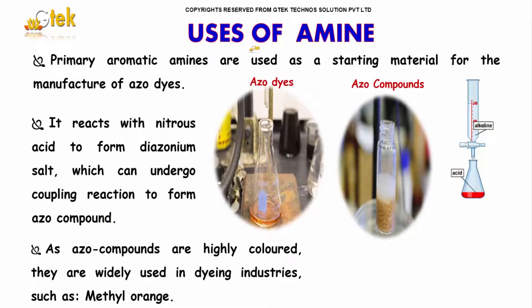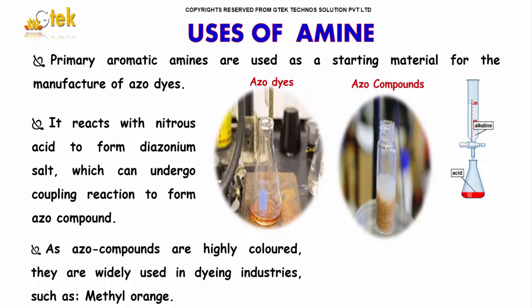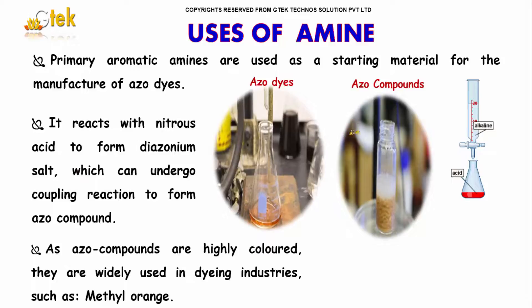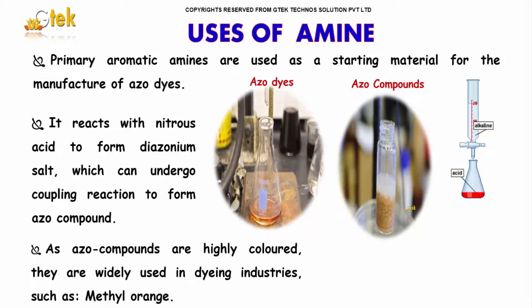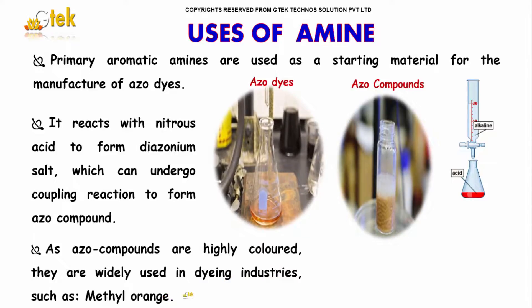Let's move on to the uses of amines. Primary aromatic amines are used as a starting material for the manufacture of azo dyes. They react with nitrous acid to form diazonium salt, which can undergo coupling reactions to form azo compounds. As azo compounds are highly colored, they are widely used in coloring and dyeing industries, such as methyl orange.